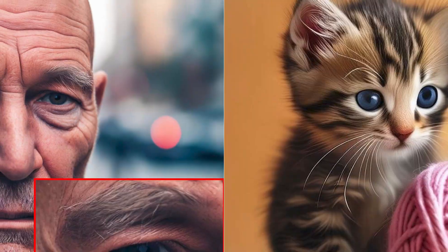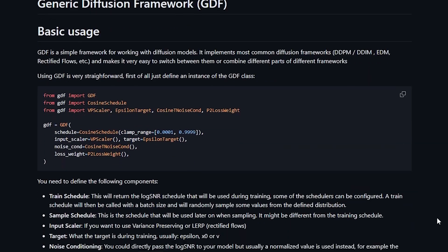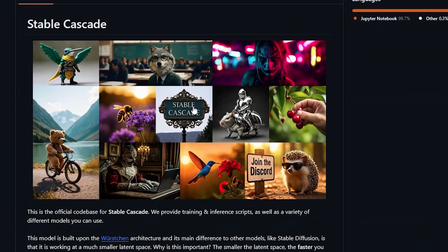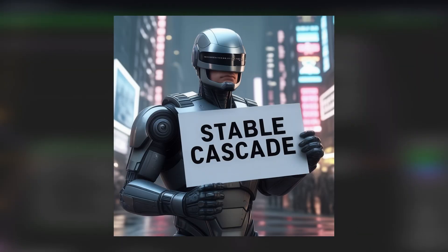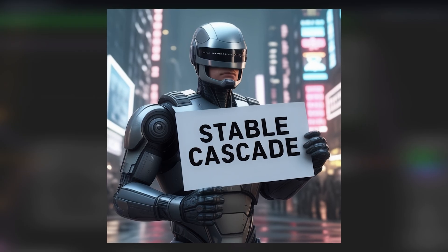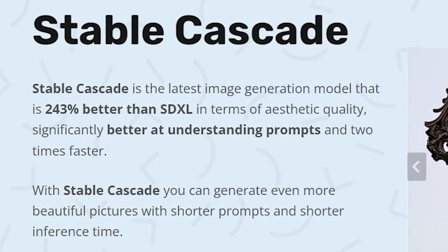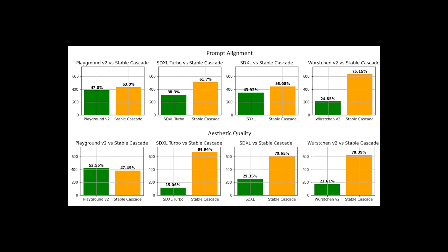The rise of AI has been extremely fast in the past few months. After researching for a few days, I found that Stable Cascade is the latest image generation model from Stability AI, which is 243% better than SDXL.